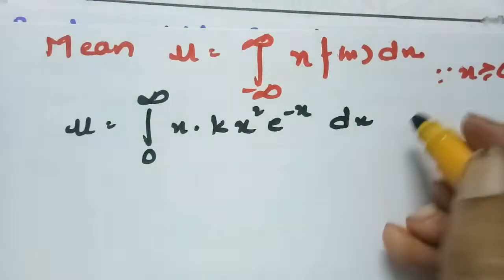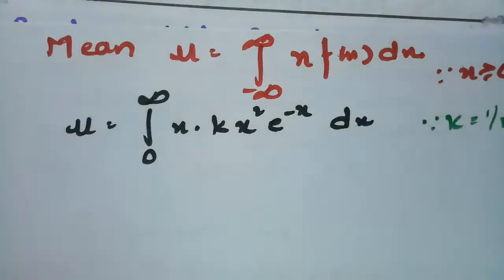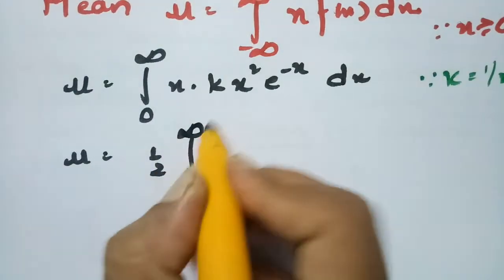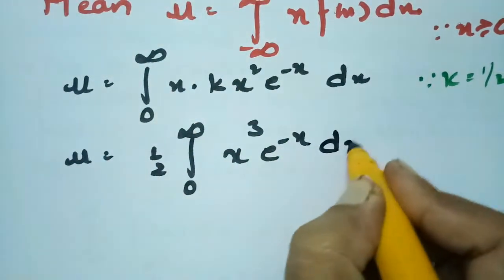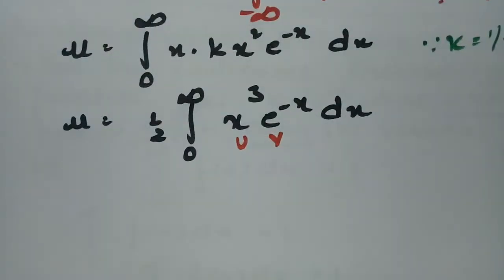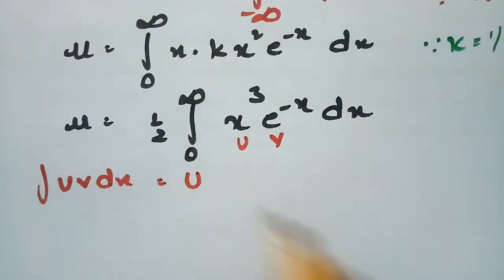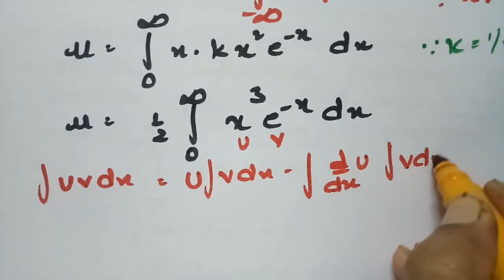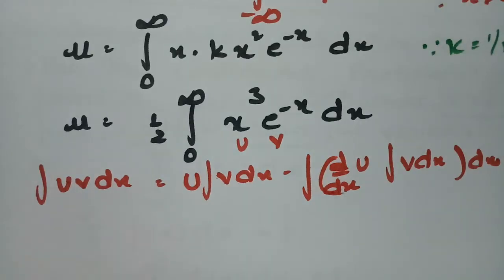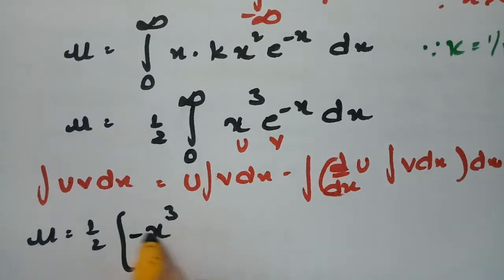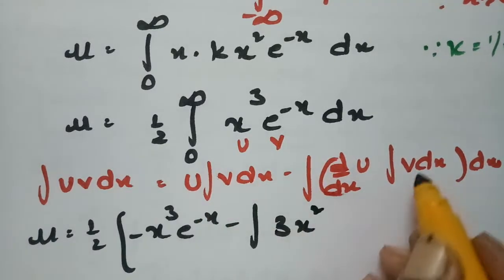Substituting k = 1/2 and f(x), we get μ = (1/2)∫(0 to ∞) x³ e^(-x) dx. We apply integration by parts again using ILATE: u = x³ (algebraic) and v = e^(-x) (exponential). Applying the formula: u left as is, v integrated to −e^(-x), minus the integral of derivative of u = 3x² times −e^(-x) dx.